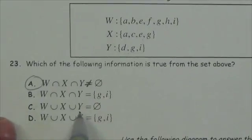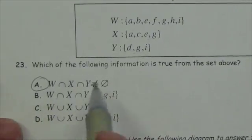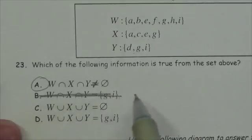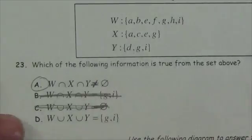Let's just take a quick look at these other ones here just to confirm. Okay, well, the intersection here is not G and I. I is not common to all of them.